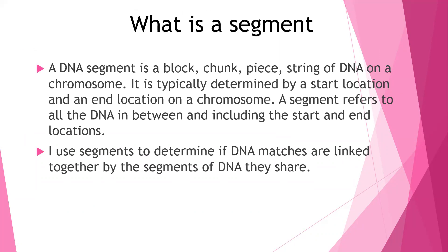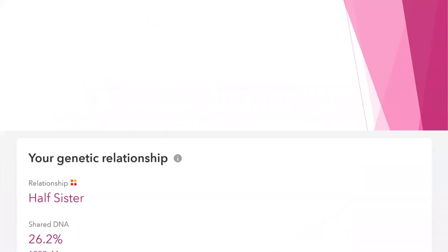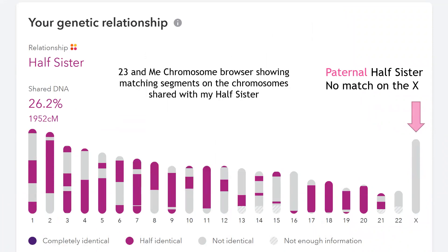A DNA segment is typically determined by a start location and end location, and it includes both. I use segments to determine if DNA matches are linked together by segments of DNA that they share. For example, these are 23 chromosomes that show the sharing of DNA segments with my maternal half-sister. As you can see, there are quite a few — 26.2% shared DNA, and 1,952 centimorgans — this is through 23andMe. They have what's called the chromosome browser, so you can compare your DNA segments from one person to another.